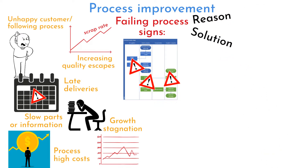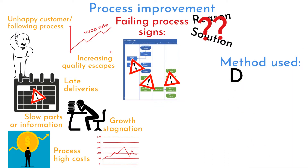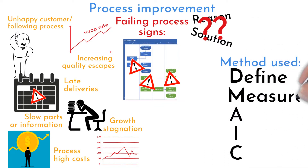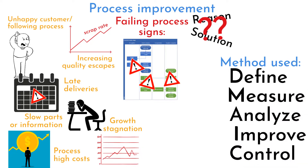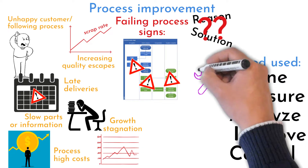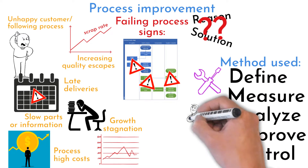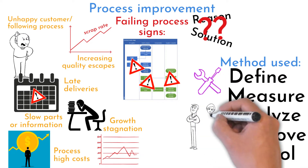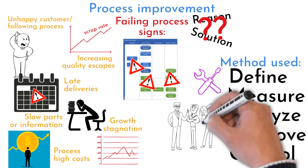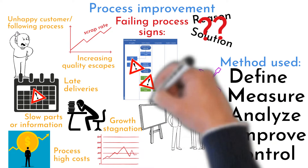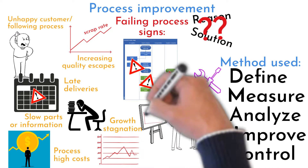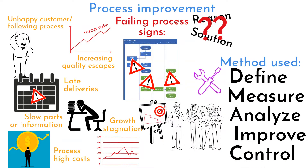In process improvement, both the problem and the solution are unknown. The Six Sigma DMAIC method is a robust method used for process improvements. Define, Measure, Analyze, Improve, and Control are its phases, each with a set of tools. It is a larger group effort to improve the current state by understanding it. Improvements are targeted based on data analysis, improving repeatability by reducing variations.